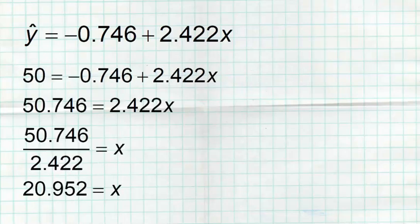We could also use it in reverse — though in the stats world we don't recommend it. If a dog is predicted to weigh 50 pounds, how many months old would it be? Plug 50 in for y, add 0.746, then divide by 2.422, and we get roughly 20.952 — so close to 21 months old, that dog would weigh a predicted 50 pounds.